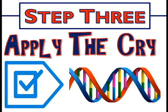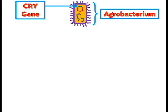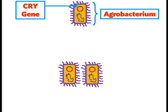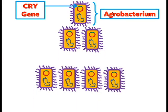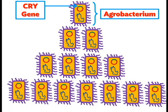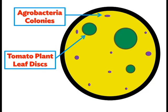Step 3: Apply the crygene. The recombinant agrobacteria now have the crygene, meaning every time they reproduce, so will the crygene. Once enough copies have been formed, we can give the crygene to our tomato plants by co-cultivating the colony of agrobacteria with pieces of our tomato plant.